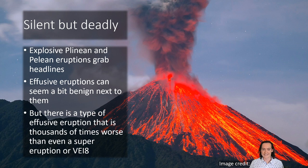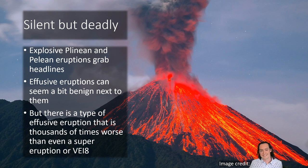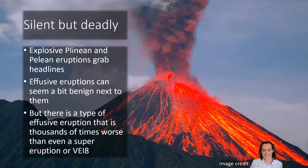That is what a flood basalt eruption is. This kind of eruption is thousands of times worse in terms of climatic effects and effects on life, and it even changes the entire surface of the Earth. It's even worse than a supervolcano — worse than a VEI-8 on the Explosivity Index — and yet it would register as a VEI-0 on the Volcanic Explosivity Index scale. It produces very little explosive volcanism; it's mostly effusive lava flows.